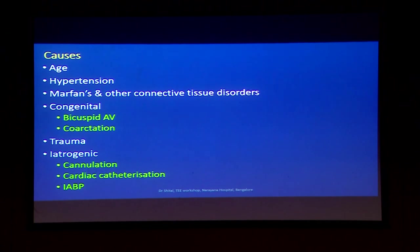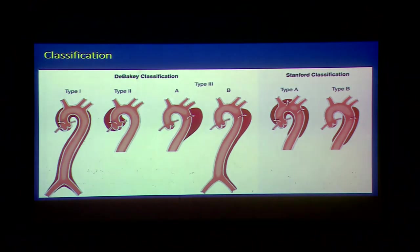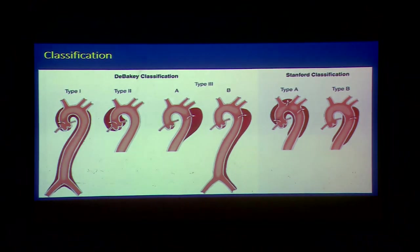Patient may complain of either chest pain or back pain — classic presentations. There may be a tear in the wall of the aorta, in the intimal layer or the medial layer. It may be linear or it may be circumferential. The classifications are two groups: DeBakey's classification and Stanford's classification — Stanford A and B.